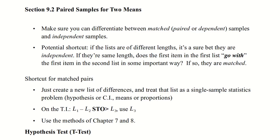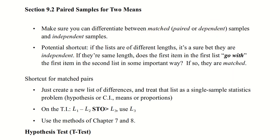Welcome to 9.2. This section is an excellent review of chapters 7 and 8 — we're going to go through all of that again. There's some new stuff at the beginning and we're going to see how to put that into our calculator. I have some calculator videos on the way too. Just a reminder that chapter 9 started with a discussion of being able to differentiate between matched and independent samples, so go back and take a look at that if needed. Our topic for 9.2 is matched, paired, or dependent samples.